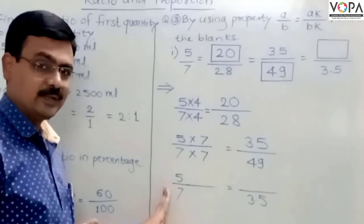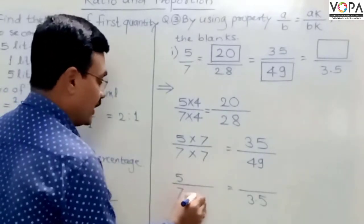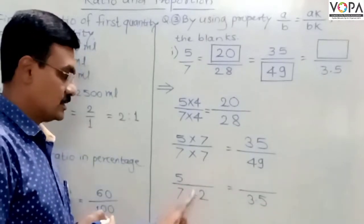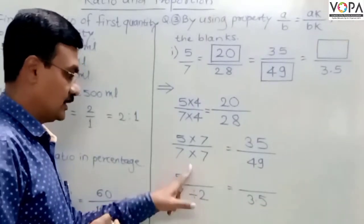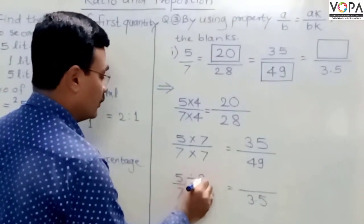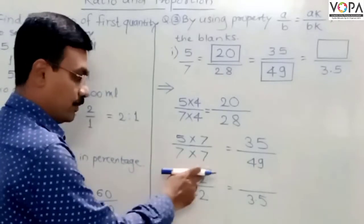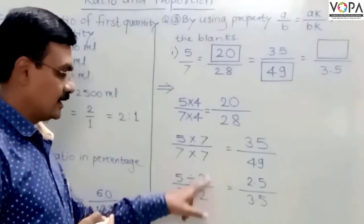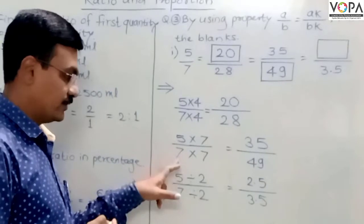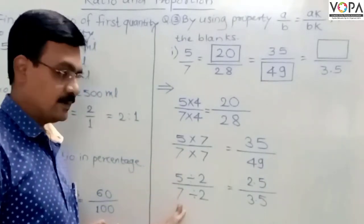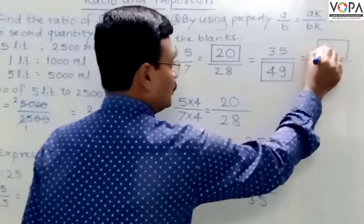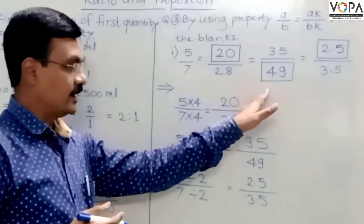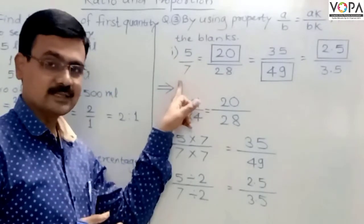Instead of using multiplication, we can say that 7 is divided by 2 to get 3.5. So we also divide the numerator 5 by 2. If you divide 5 by 2, the required answer is 2.5. We are dividing both the first term and second term of the ratio by the same non-zero number, and therefore the answer is 2.5. Here we multiplied or divided the terms of the ratio by the same non-zero number.